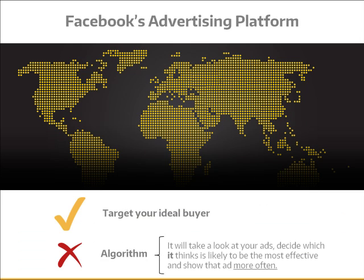The big advantage of Facebook's advertising is that you can really target your ideal buyer. The downside is that for CPC campaigns, Facebook uses an algorithm. It will take a look at your ads, decide which it thinks is likely to be the most effective, and show that ad more often. So if you're running a campaign of five ads with a $50 budget to see which is the most effective, you'll find that one ad might soak up $25 from the budget, with the other half spread out over the other four ads. That makes testing and making meaningful comparisons across the ads very difficult.